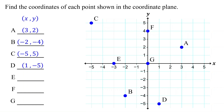Next, we have point E. It is on the x-axis at x equals negative 3, so its x-coordinate is negative 3. Note that since the x-axis is at y equals 0, any point on the x-axis has a y-coordinate of 0. So, the y-coordinate of point E is 0. Therefore, its coordinates are (-3, 0).